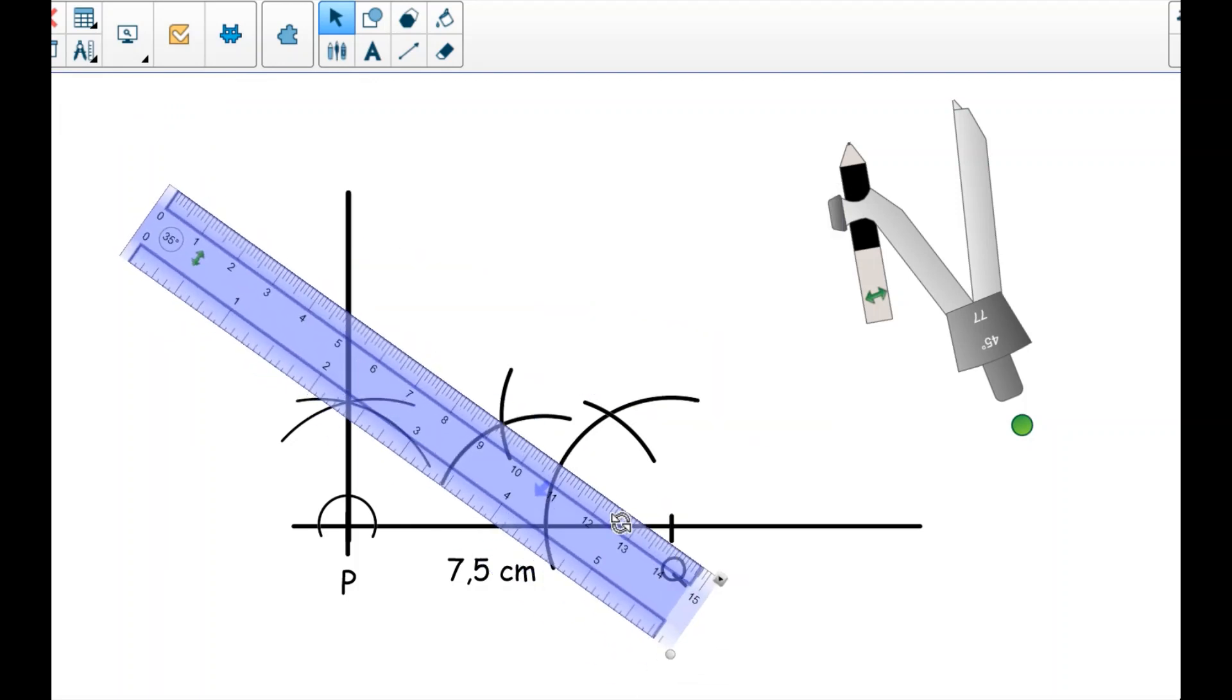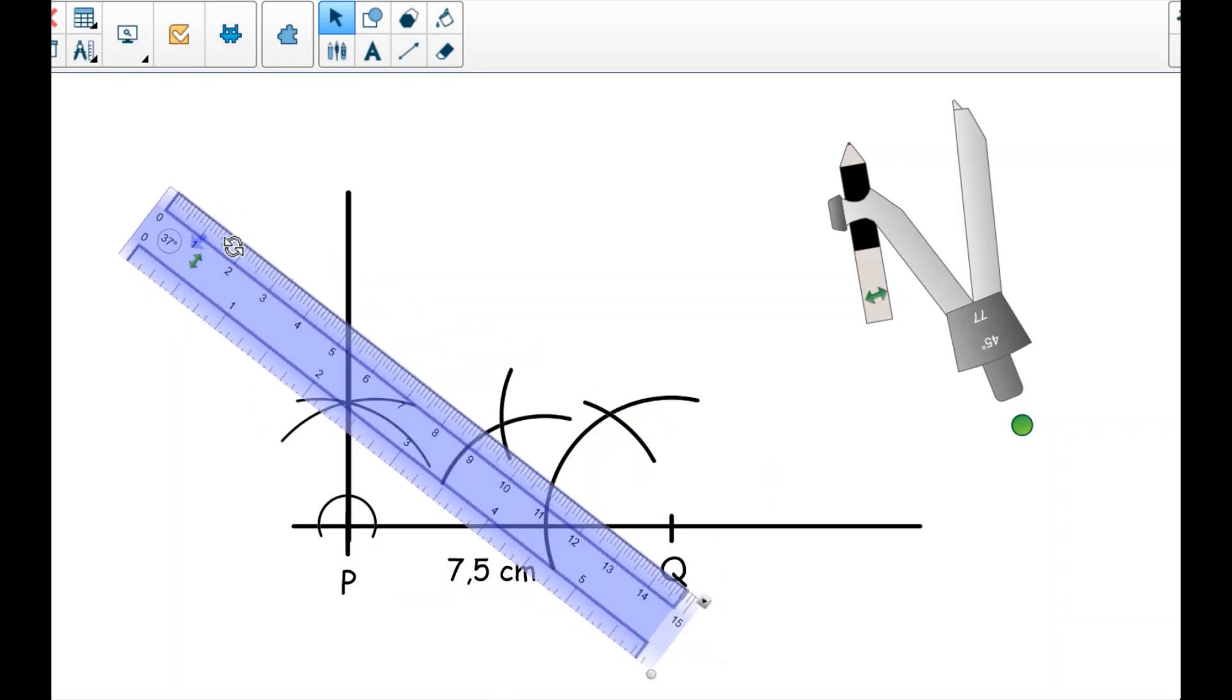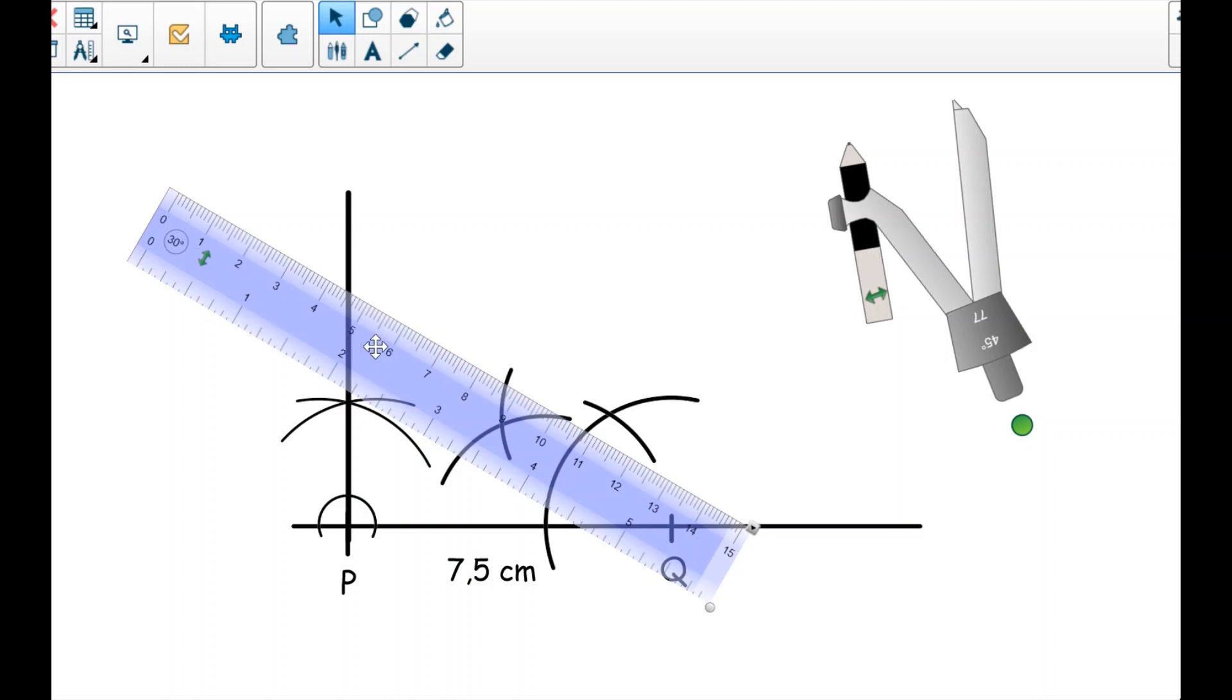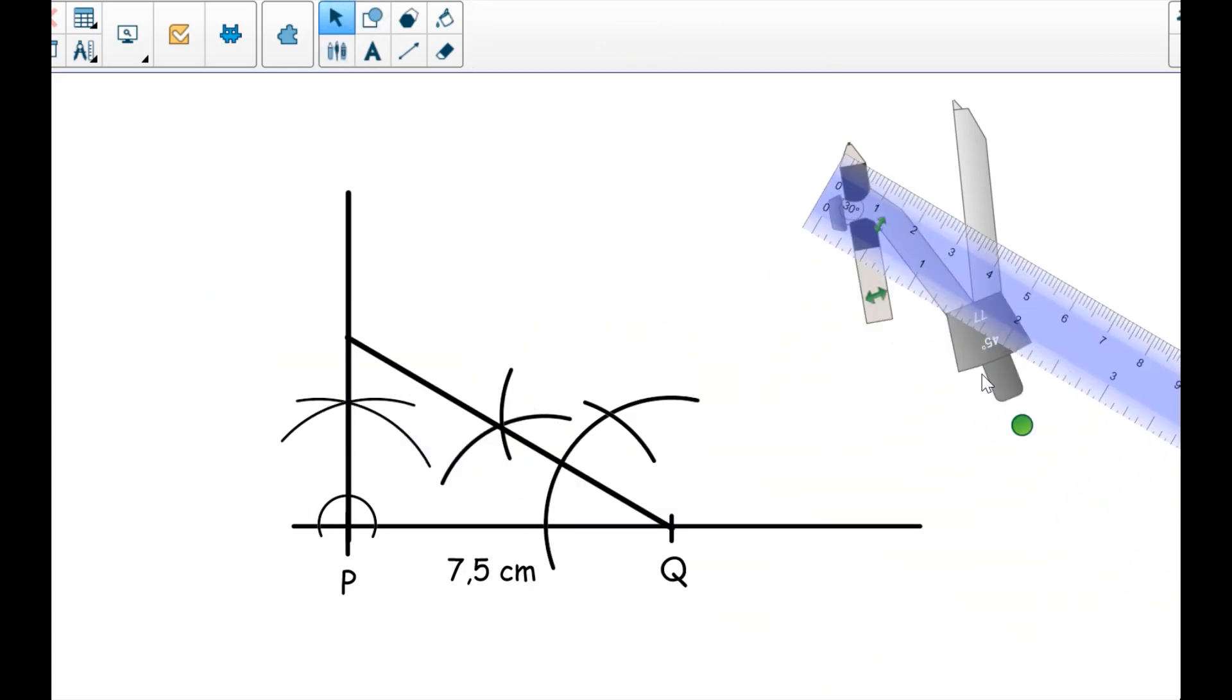So I have bisected the 60 degree angle. Let me align my ruler. My ruler must be aligned from point Q to where the arcs intersect. Then I will have to label. Let me remove my ruler.